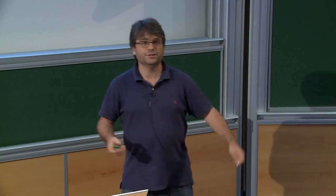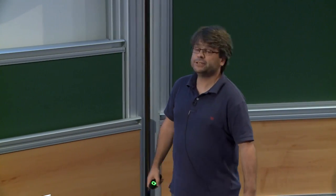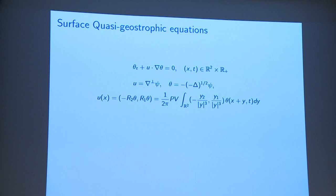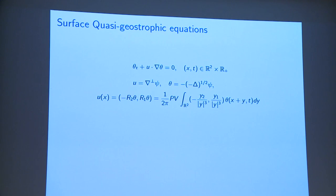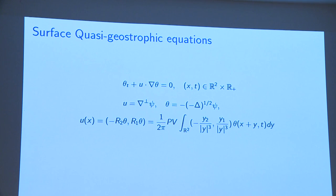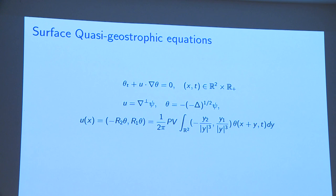What is the surface quasi-geostrophic equation? This is an equation in dimension two — we're in the plane with no boundaries. Theta is the unknown: a scalar function transported by an incompressible fluid. Since the velocity field is incompressible, we can define a stream function such that the velocity equals the perpendicular gradient of the stream function, and the relation between the stream function and theta is given by the square root of the Laplacian. The velocity fields are the Riesz transforms of theta.